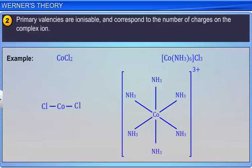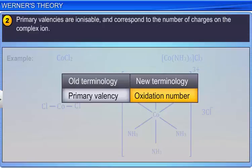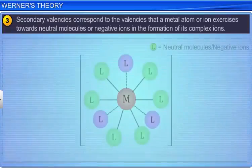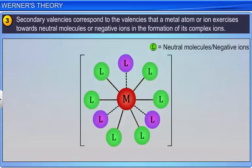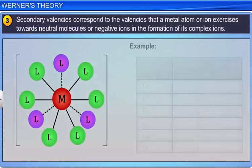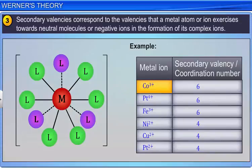The third postulate is that secondary valencies correspond to the valencies that a metal atom or ion exercises towards neutral molecules or negative ions in the formation of its complex ions. Every metal has a fixed number of secondary valencies or coordination number. For example, cobalt 3+, platinum 4+, and iron 3+ ions are recognized to have a coordination number of 6. Similarly, nickel 2+, copper 2+, and platinum 2+ ions have a coordination number of 4.